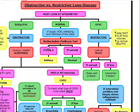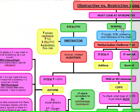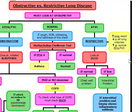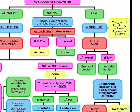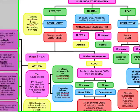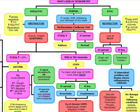If spirometry is normal in a patient presenting with cough, shortness of breath, wheezing, and tightness of the chest, we perform a methacholine challenge test. If the FEV1 is decreased on this test, we've made our diagnosis of asthma. If the FEV1 is normal, the patient is normal.